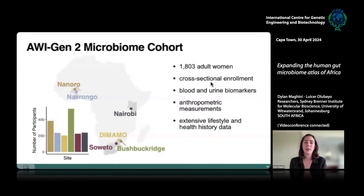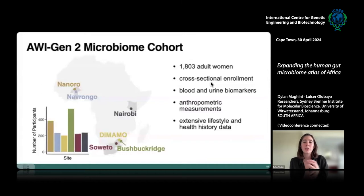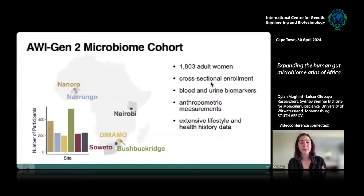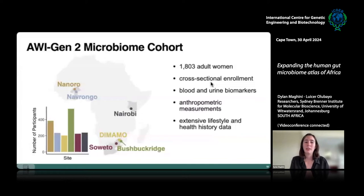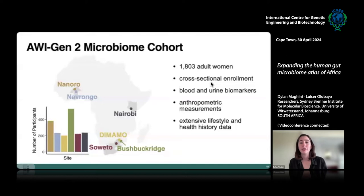The AWI-Gen Microbiome Project was a subset of the overall AWI-Gen genomic study. We recruited around 1,800 adult women from six study sites across four countries — one site each in Burkina Faso, Ghana, and Kenya, and three different sites in South Africa. This was a cross-sectional study, randomly selecting women who met inclusion criteria at each site, giving us a more accurate picture of the population breadth — in contrast to most microbiome studies in high-income countries. On top of microbiome data, we also have blood and urine biomarkers, human genome SNP panels, anthropometric measurements, and extensive lifestyle and health history surveys.